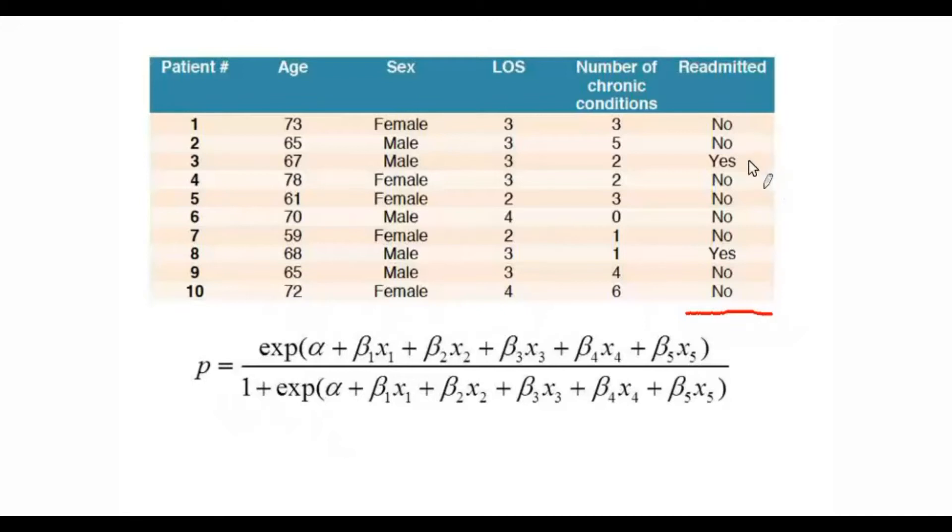What we see was that 8 were not readmitted within 30 days, but 2 were. So our observed number is going to be 2.